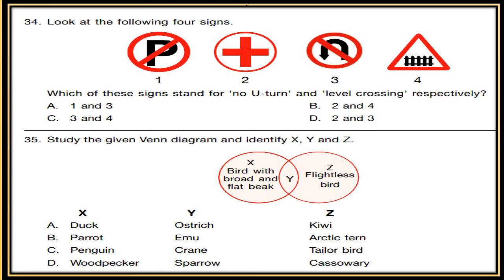Question 34: Look at the following four signs. Which of these signs stands for 'no U-turn' and 'level crossing' respectively? These are signs we generally see in daily life. Be prepared for road sign questions as they are commonly asked in GK Olympiad.